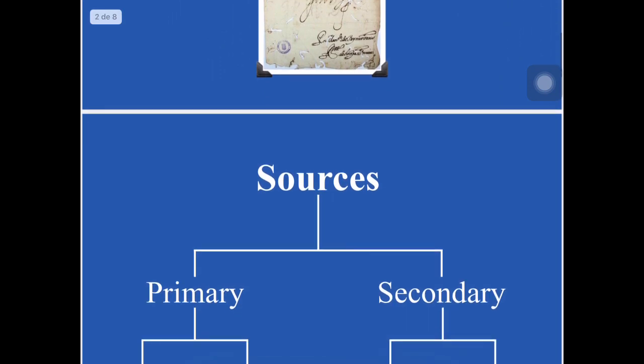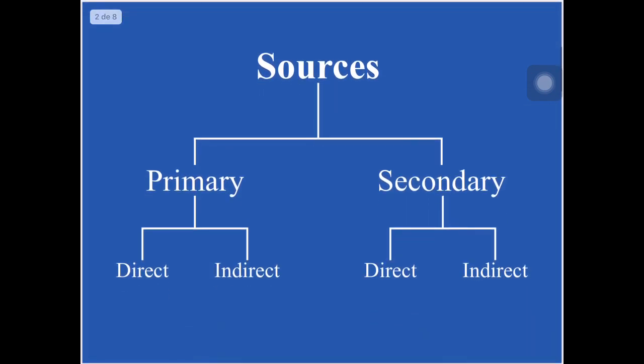Let's go to the main area of this topic. If we were to classify the sources, we would say that we have basically primary sources, secondary sources, and both of them can be either direct or indirect sources. So we can have a primary source that is indirect, a primary source that is direct, a secondary source that is indirect, or a secondary source that is direct.